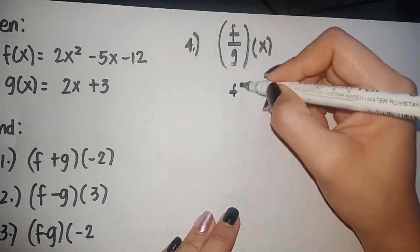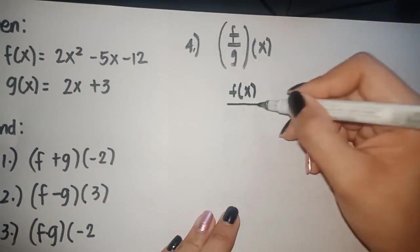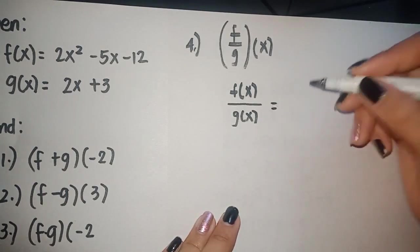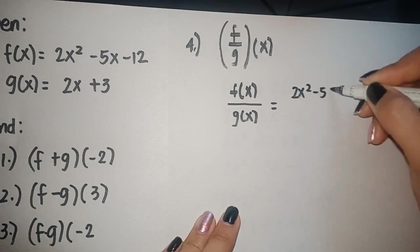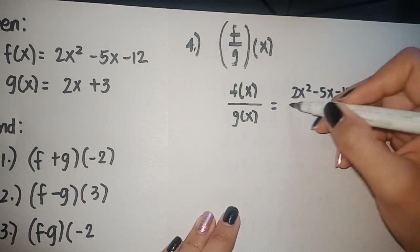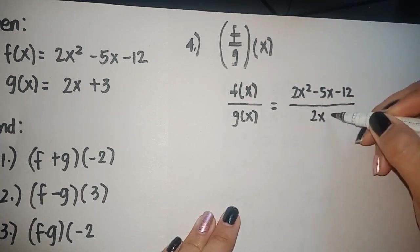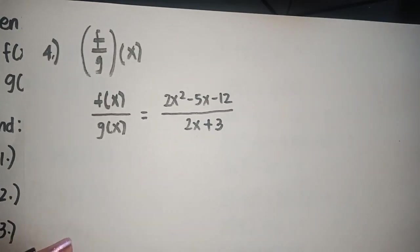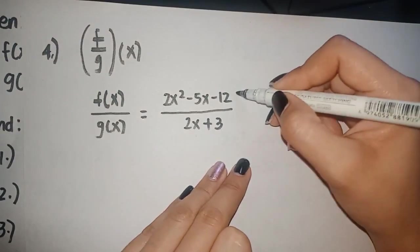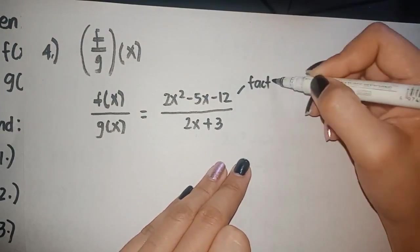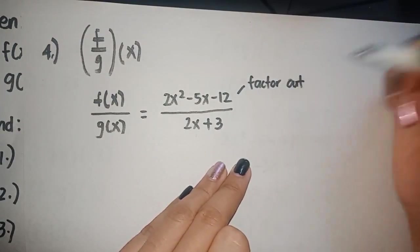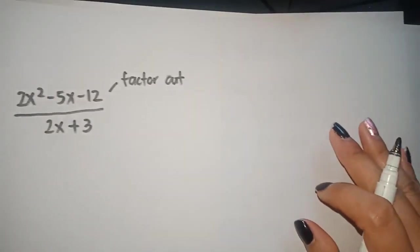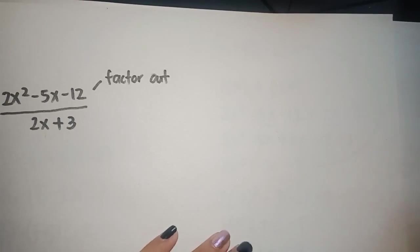Okay, so let's have the last one, division. f over g of x is the same with f of x over g of x. Next is we have 2x squared minus 5x minus 12 all over 2x plus 3. Again, the first thing that you should think of in terms of division is to cancel out common terms. And for us to cancel out common terms, you have to factor it out.